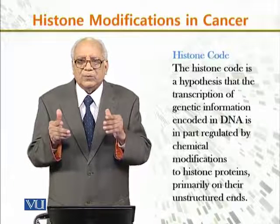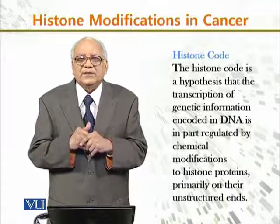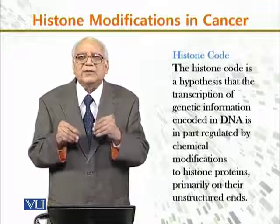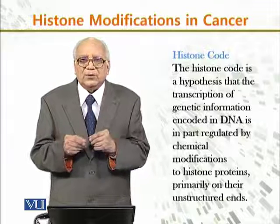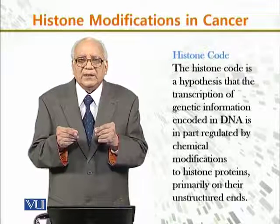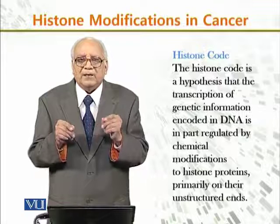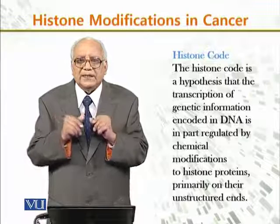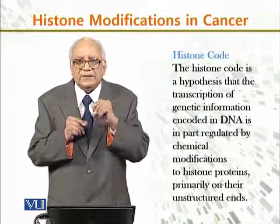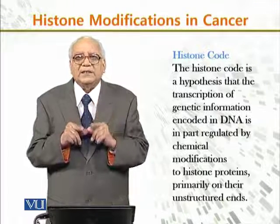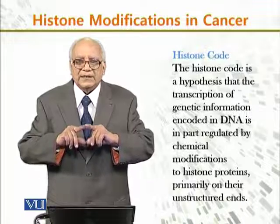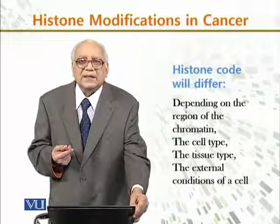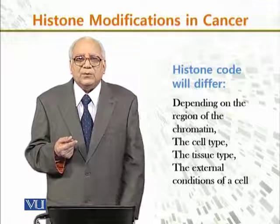The modification that occurs on the unstructured ends of histones is known as the histone code. The histone code is a hypothesis that the transcription of genetic information encoded in the DNA is regulated by chemical modification, and these chemical modifications control and regulate gene expression.